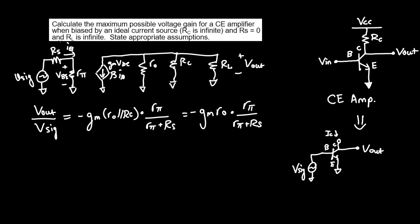Moving on, we are given that RS equals zero. So if RS equals zero, then it's just RPi over RPi. So Vout over Vsig equals negative GM RO. I'll write it up here, because we're multiplying it simply by RPi over RPi, which equals one.